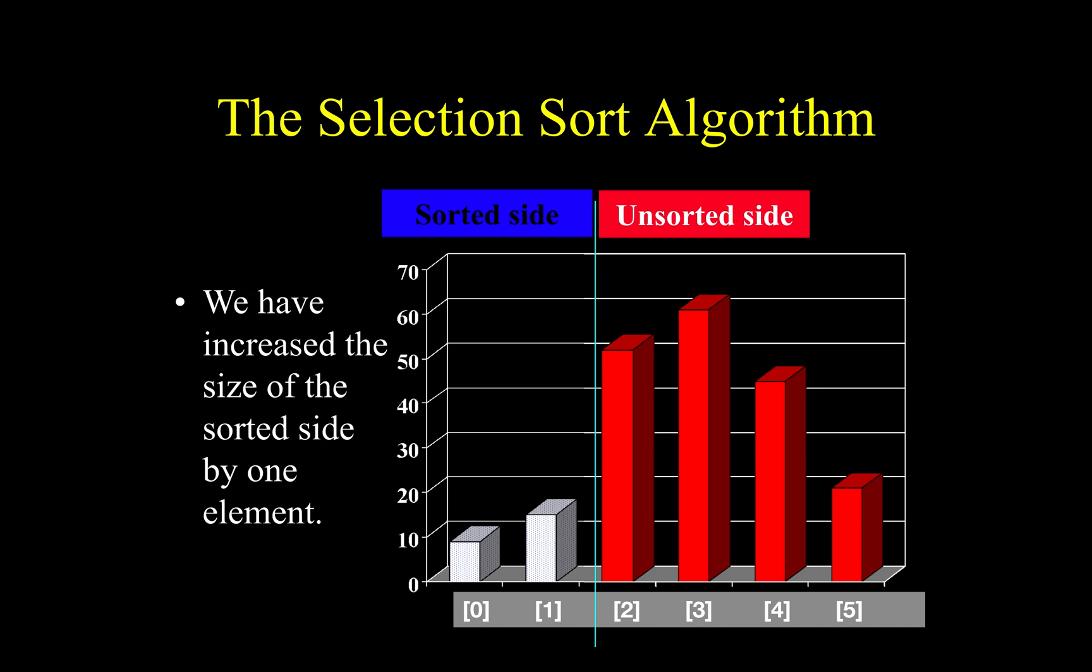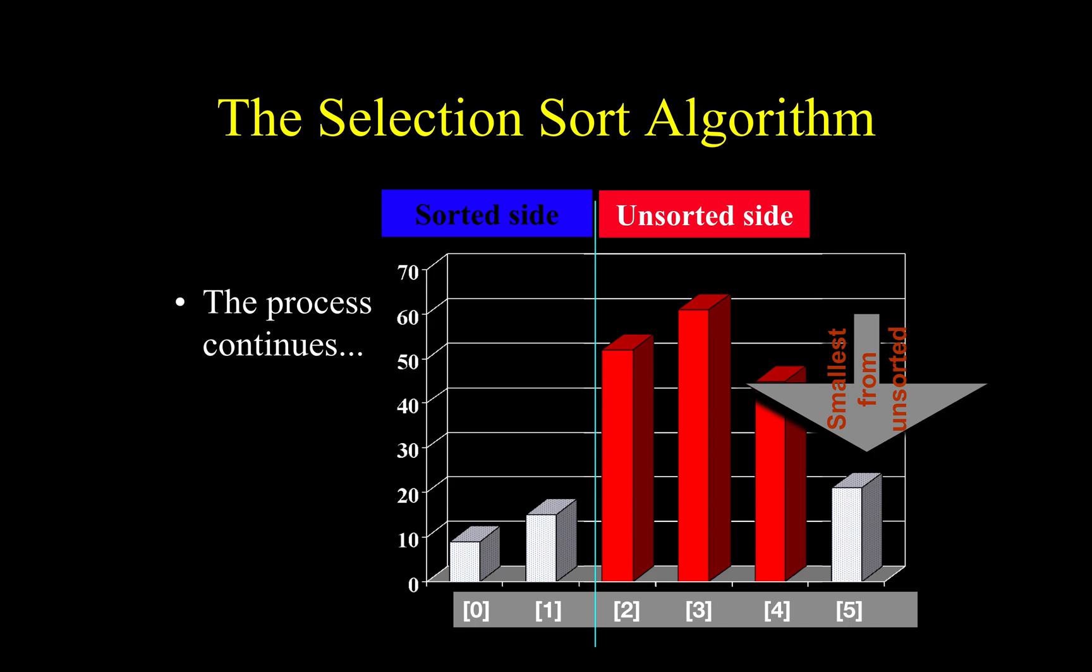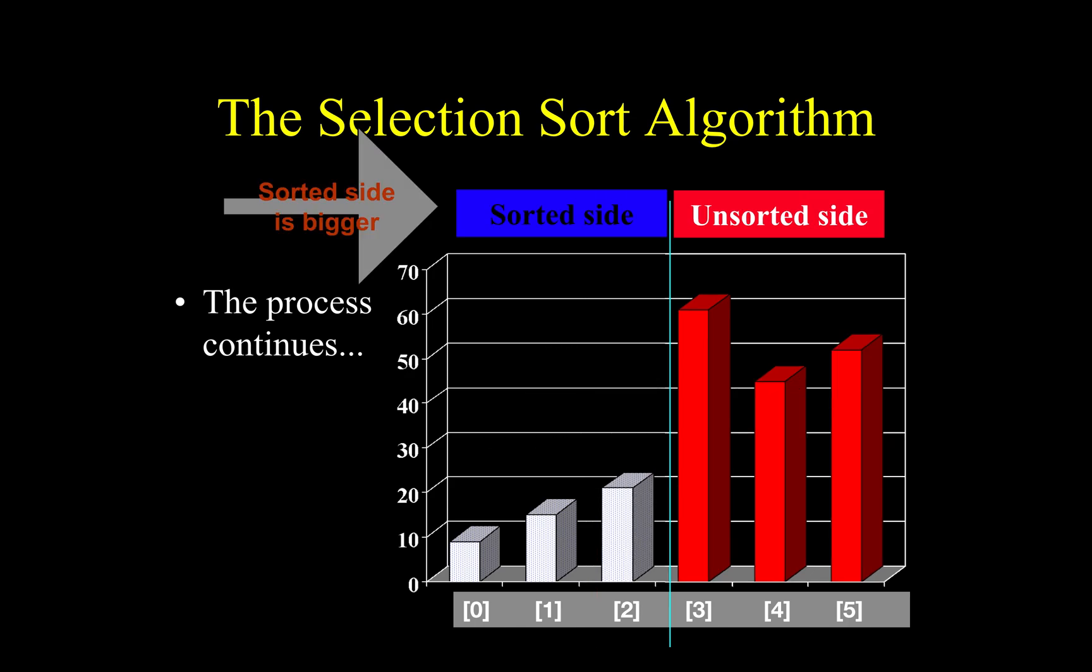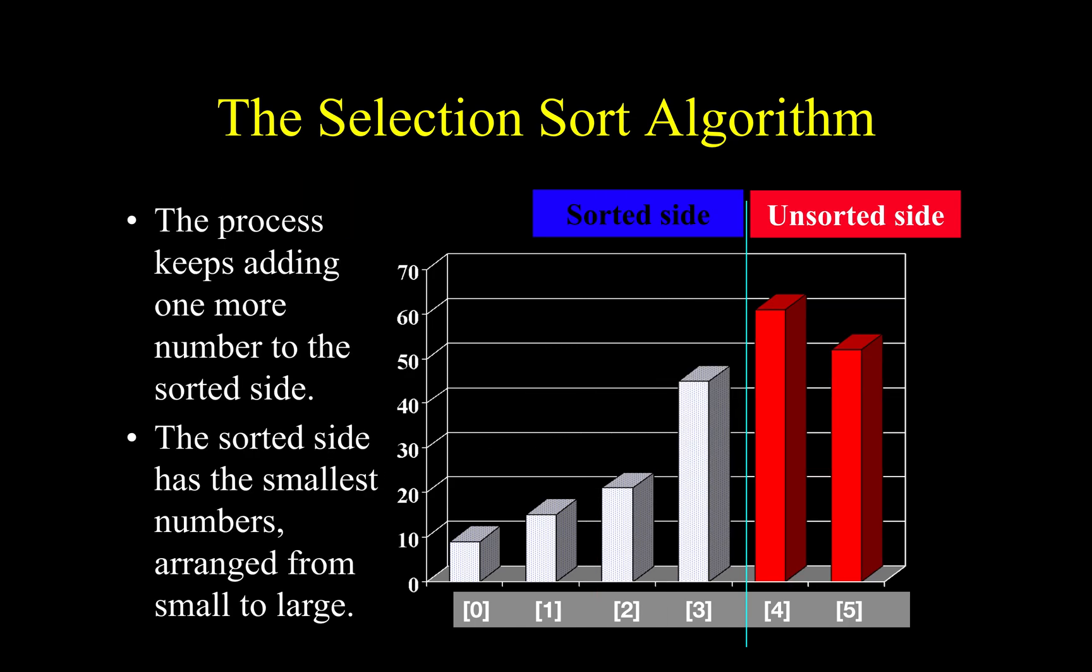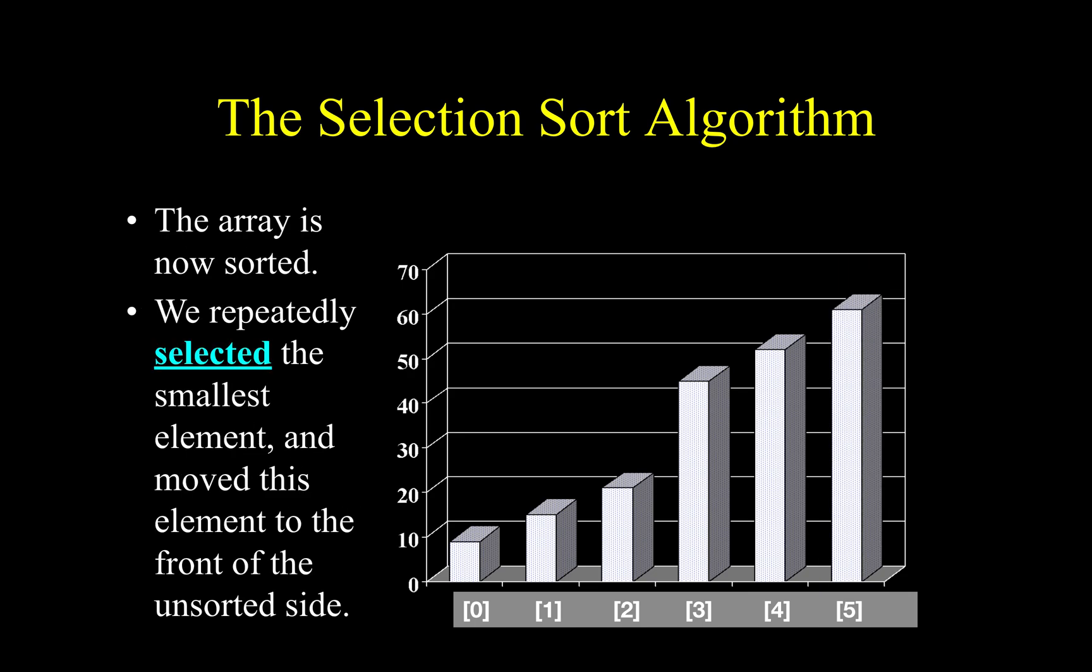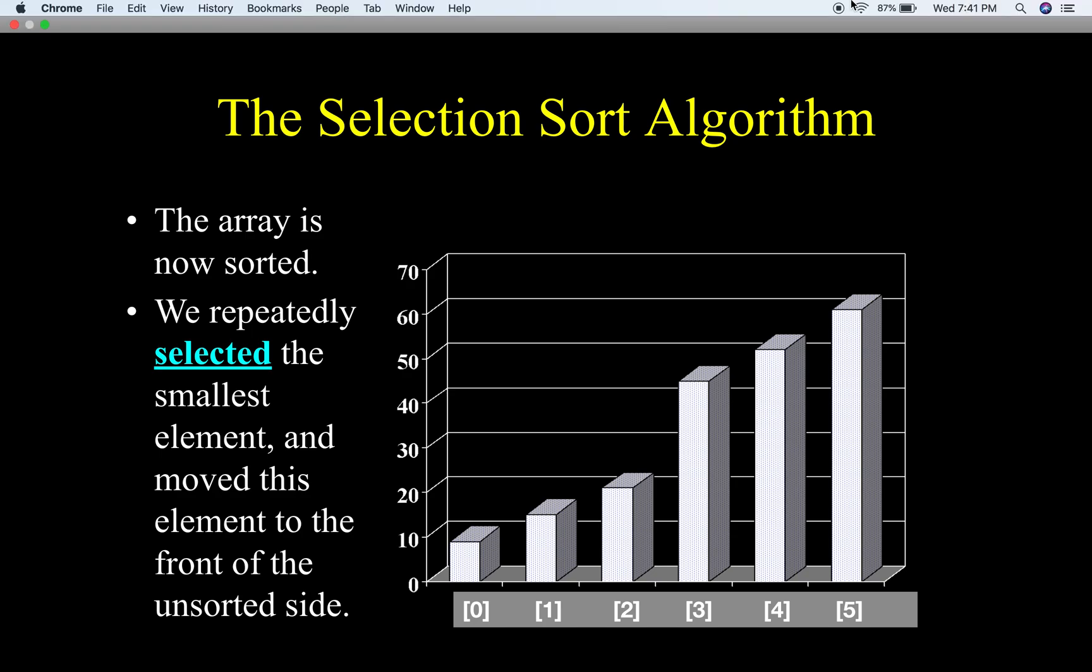You do this operation again and again until the end, until the array is sorted. That is the end of the selection sort algorithm.